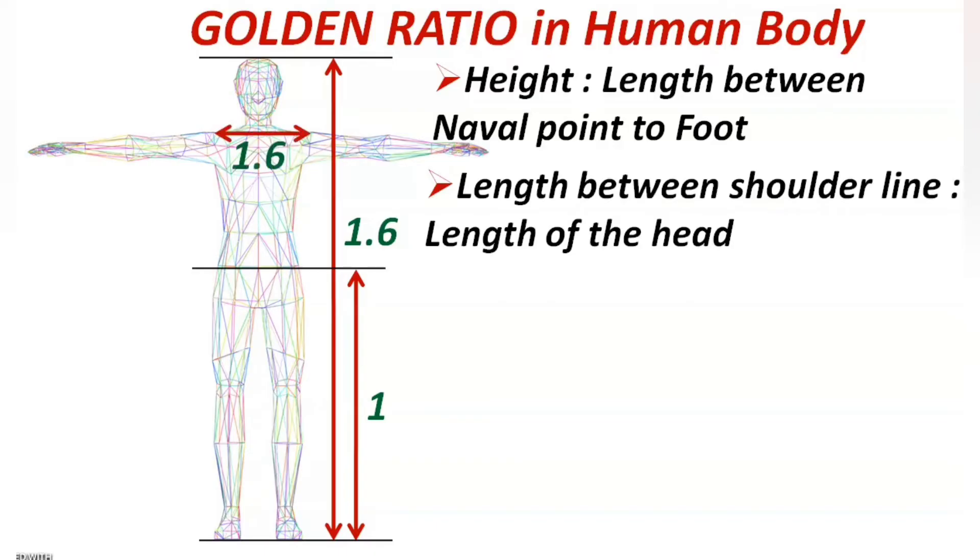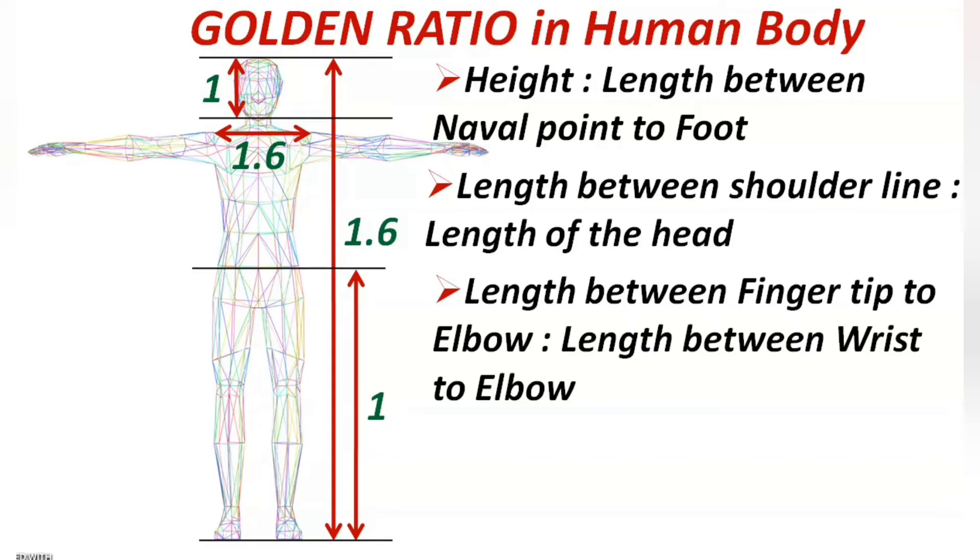If length of the shoulder line is 1.6 units, then the length of the head will be one unit. Then the ratio is said to be 1.6 is to 1, which is a golden ratio.